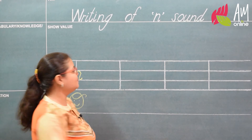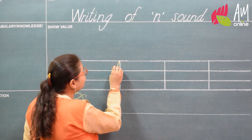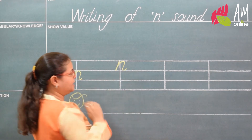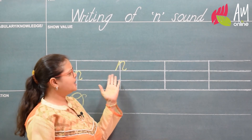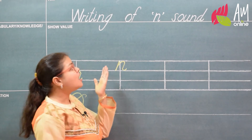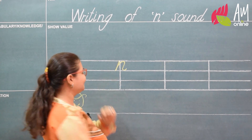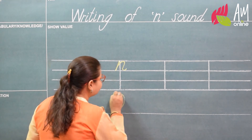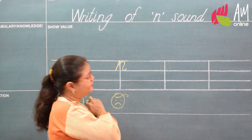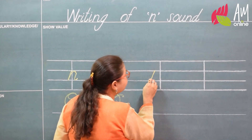Now let's write one more time. Start, slant down, go up, make a roof, come down, slant, and a monkey tail. I can see that the formation of the na sound is good enough, but I have started from the top line. So shall I give it a smiley face? No, I'm going to give it a sad face, because I have to start it from the first middle line.